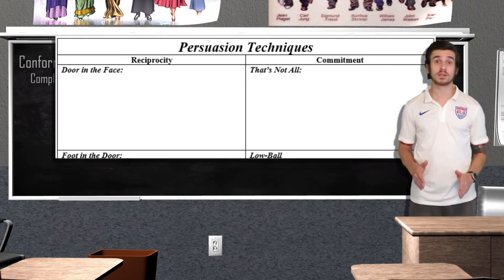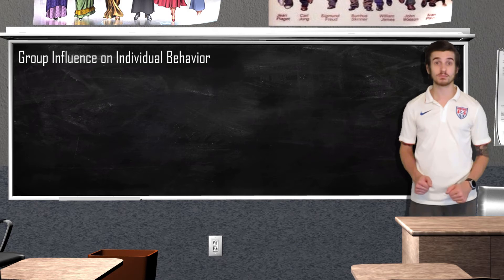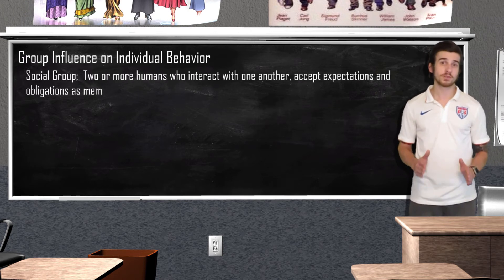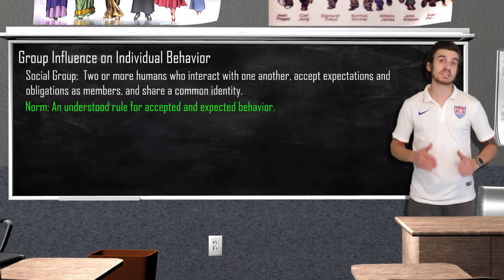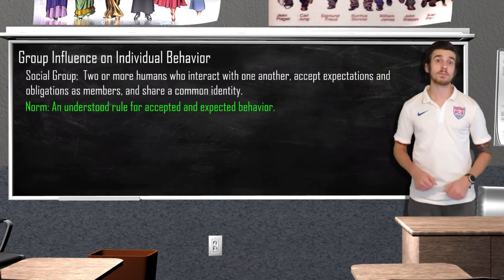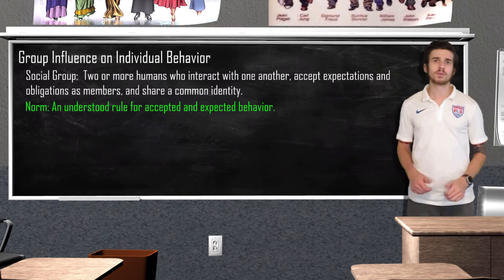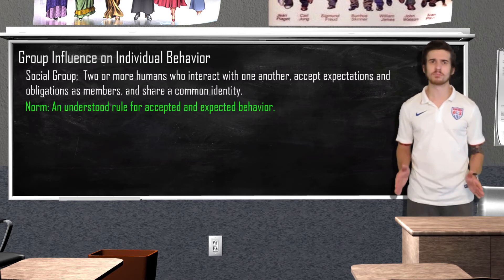Now onto our last topic of how group influences can affect our individual behavior. A social group can be defined as two or more humans who interact with one another, accept expectations and obligations as members of the group, and share a common identity. Norms are an understood rule for expected and accepted behavior — norms prescribe proper behavior. An example of a norm could be making eye contact with someone while you're talking to them. If you were to deviate from this norm, you might make some people feel pretty uncomfortable — you get some entertaining results when you have an entire conversation with someone while staring at their shoulder or their forehead.